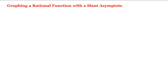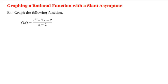Let's see how to graph a rational function with a slant asymptote. For example, let's graph this function here. The first thing to notice is that this function is in simplest form — the numerator and denominator do not have any common factors. So let's start by finding any asymptotes of its graph.